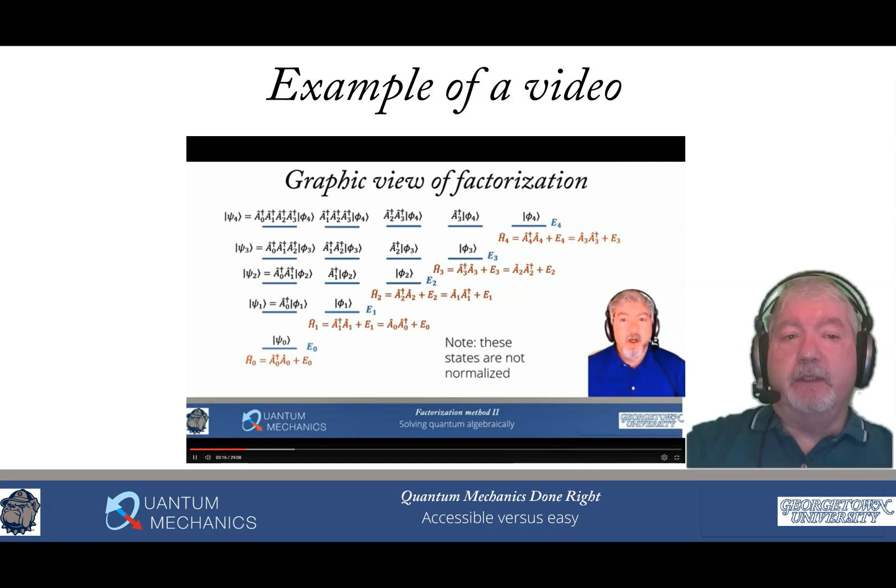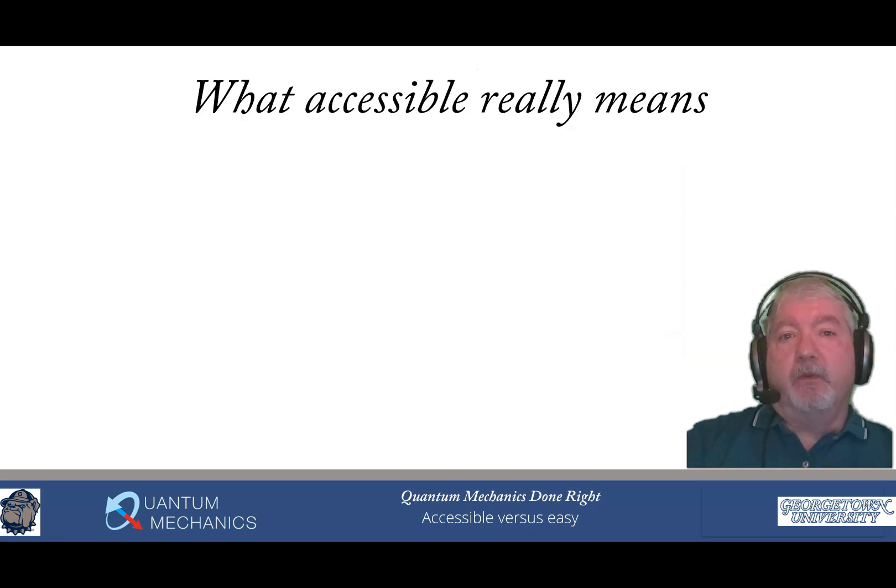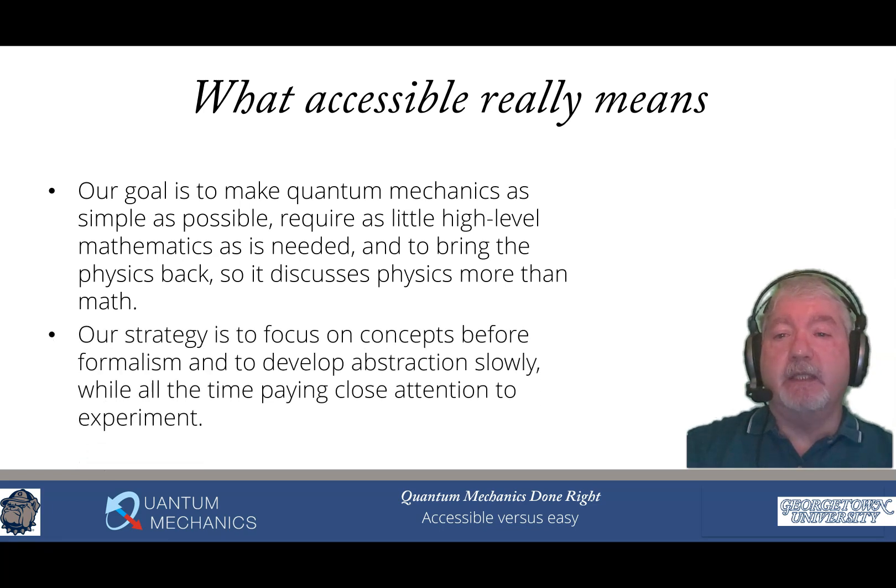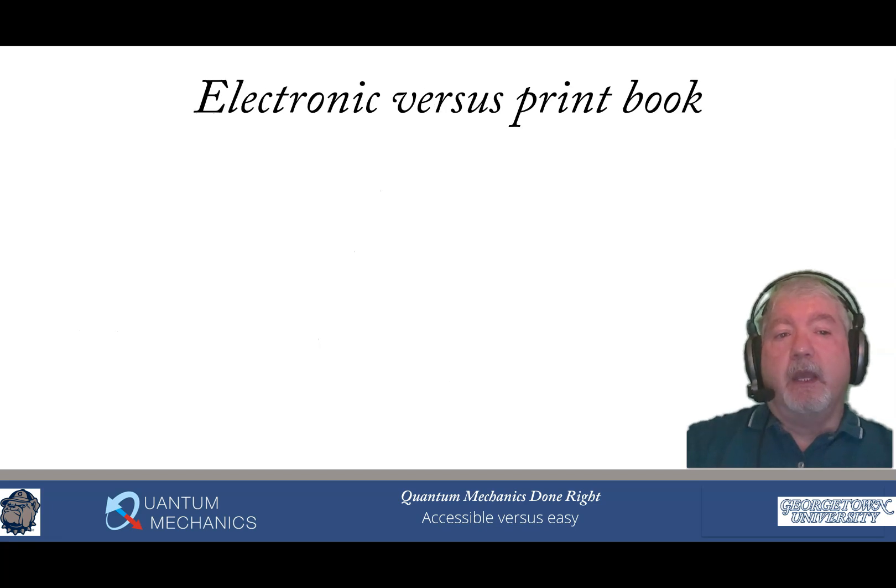That just gives you a little bit of a taste of how the videos themselves work. As I mentioned, there's well over 100 of these videos available for you to look at. So what does accessible really mean? Our goal is to make quantum mechanics as simple as possible, require as little high-level mathematics as is needed, and to bring the physics back so it discusses physics more than math. Our strategy is to focus on concepts before formalism and to develop abstraction slowly, while all the time paying close attention to experiment.